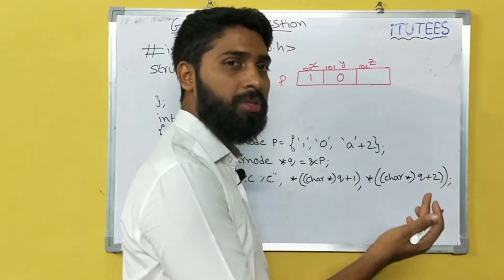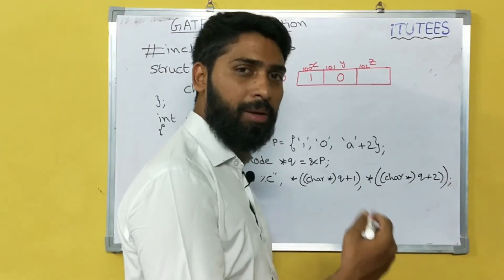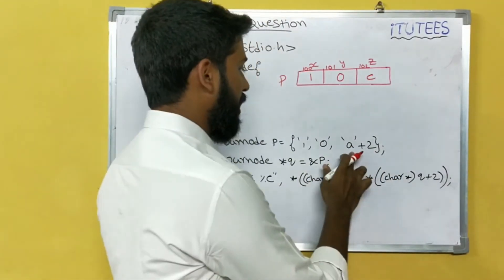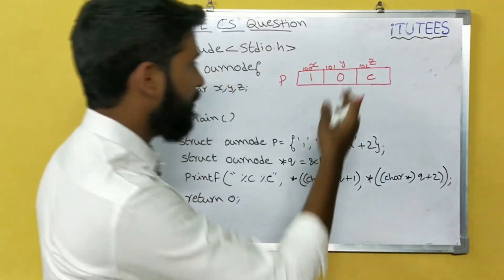So 'a' plus 2, that means 'a' plus 1 is 'b', 'b' plus 1 is 'c'. That means this equals to 'c'. So 'a' plus 2 means 'c'.